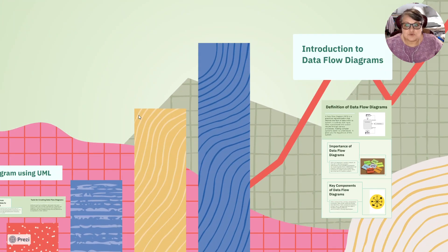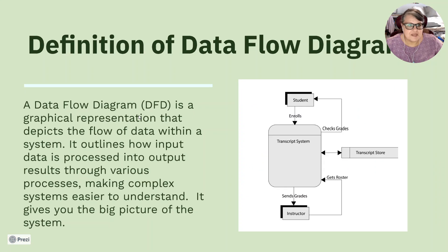Introduction to data flow diagrams. The definition of a data flow diagram. A data flow diagram is a graphical representation that depicts the flow of data within a system. It outlines how input data is processed and output data results through various processes, making complex systems easier to understand. It gives you the big picture of the system.